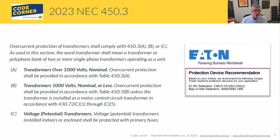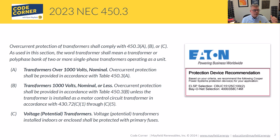When we're talking about overcurrent protection for transformers, the requirements are laid out in 450.3(A), (B), or (C). Section A is for transformers over a thousand volts, B covers a thousand volts nominal or less, and C covers voltage potential transformers. We're going to focus on B — a thousand volts or less — because that covers a large portion of what we see at our engineering firm and within the industry at large.